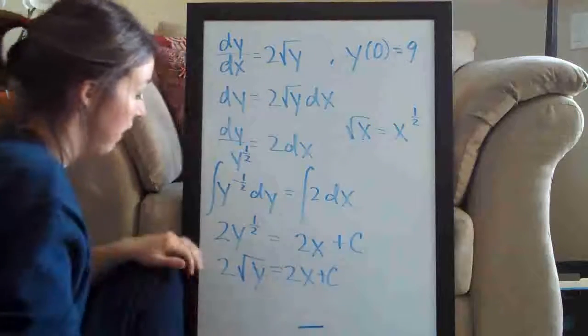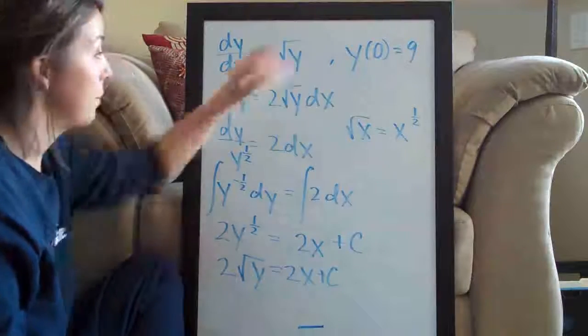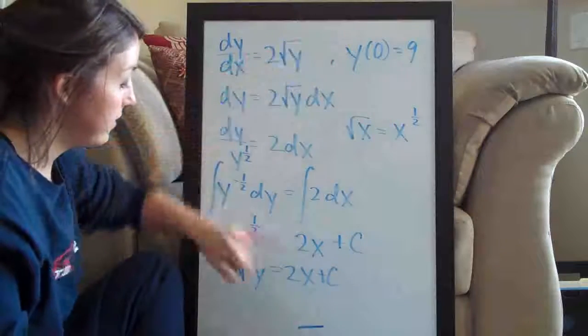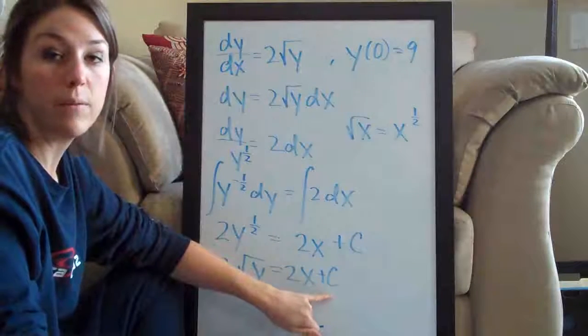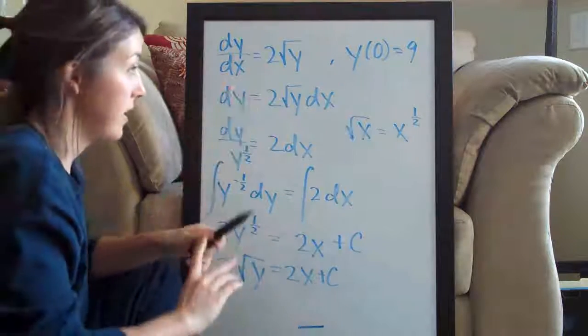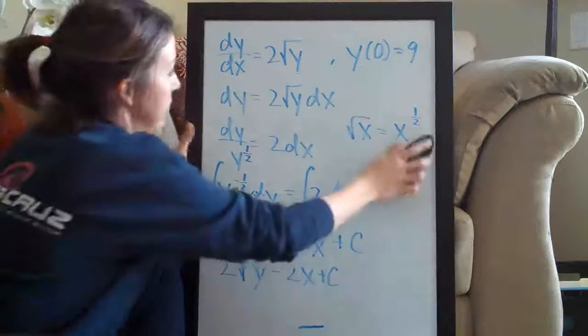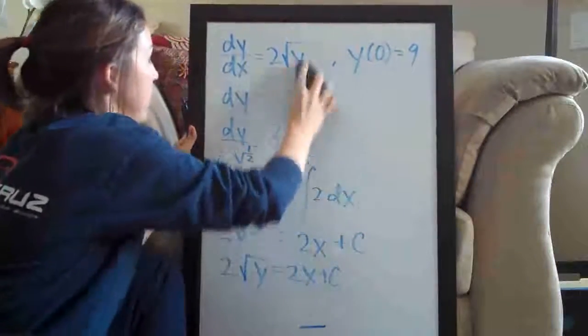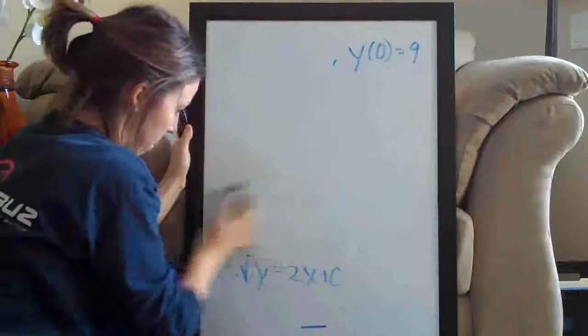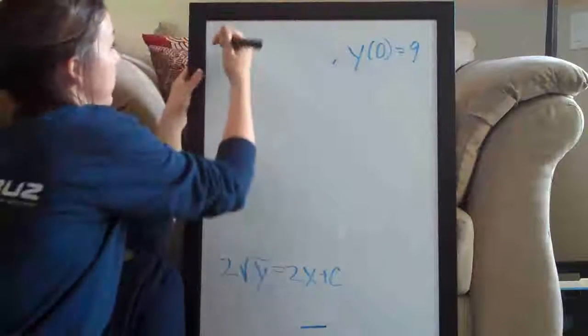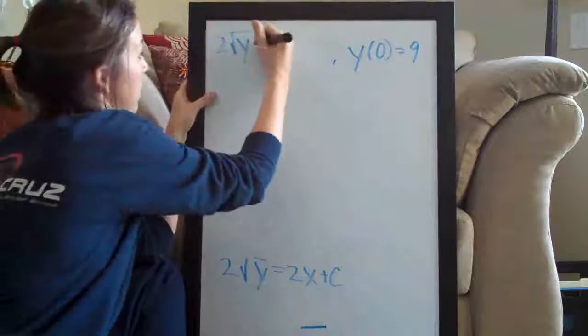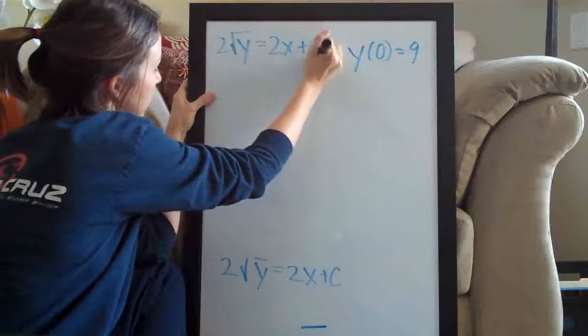So this is our function. At this point, we can plug in the values from our initial condition to solve for C and then come up with an equation equal to y. So we have 2 times the square root of y equals 2x plus C.